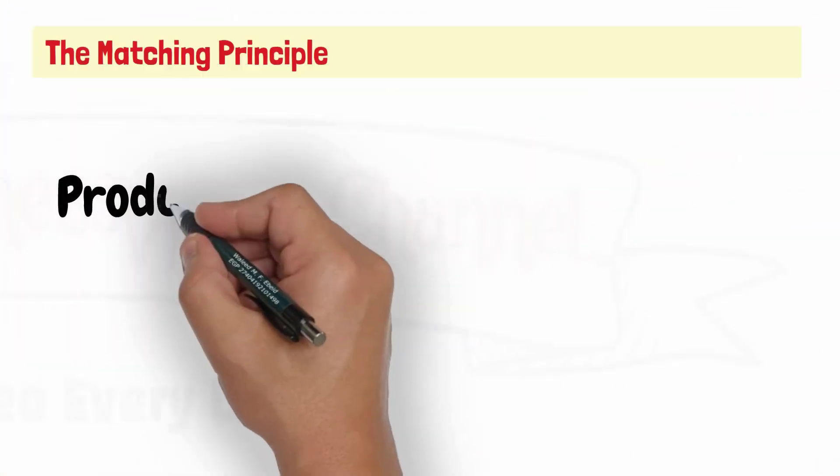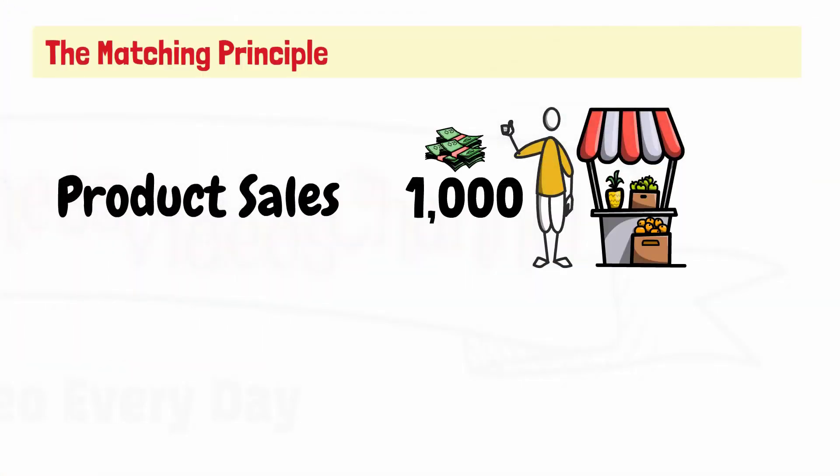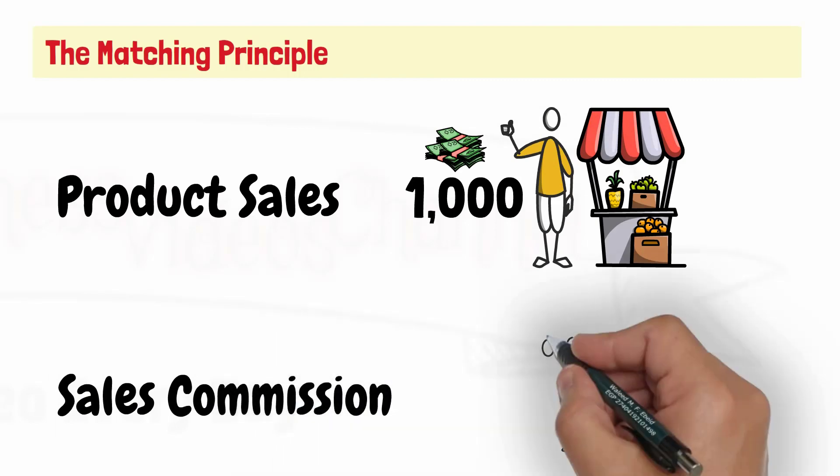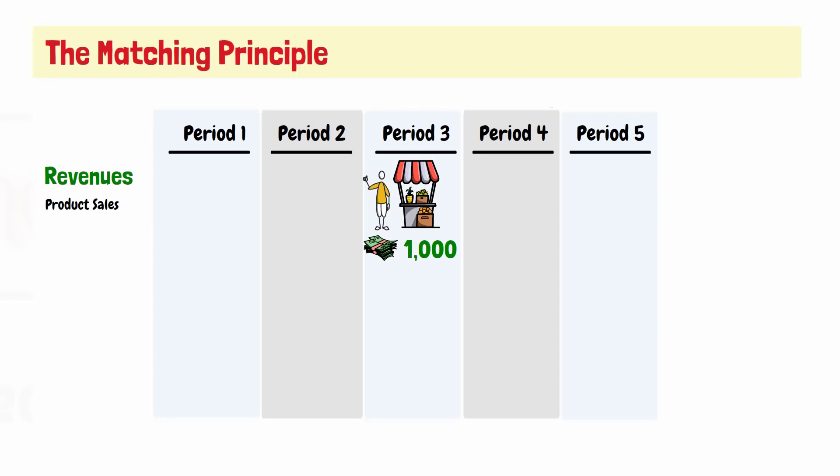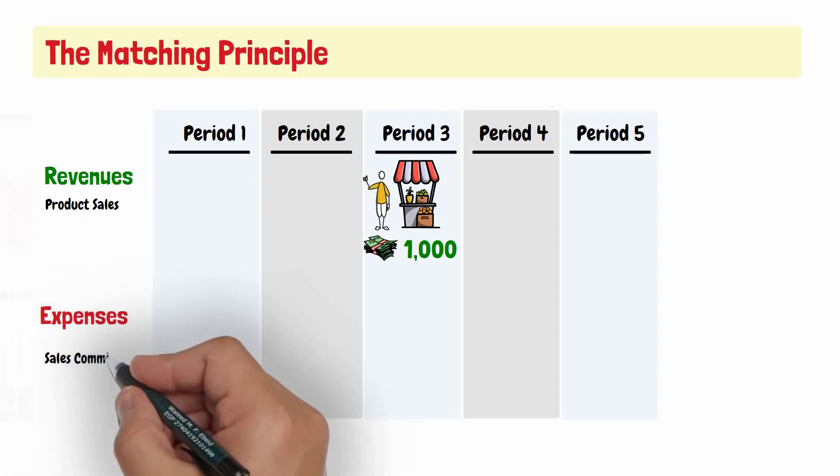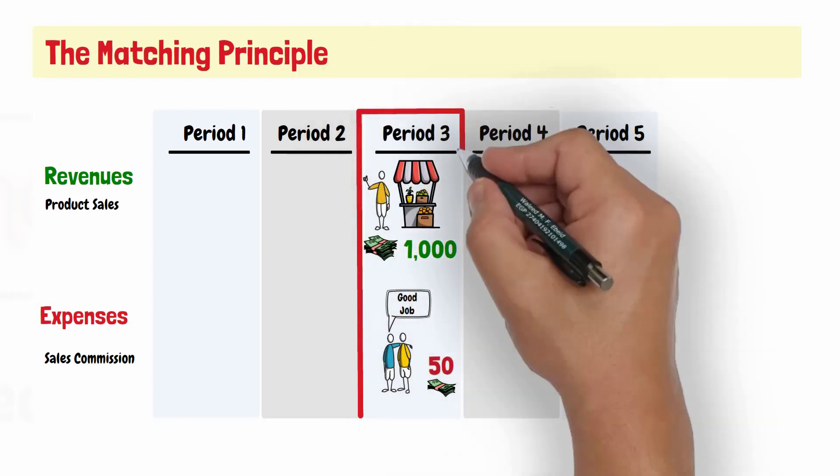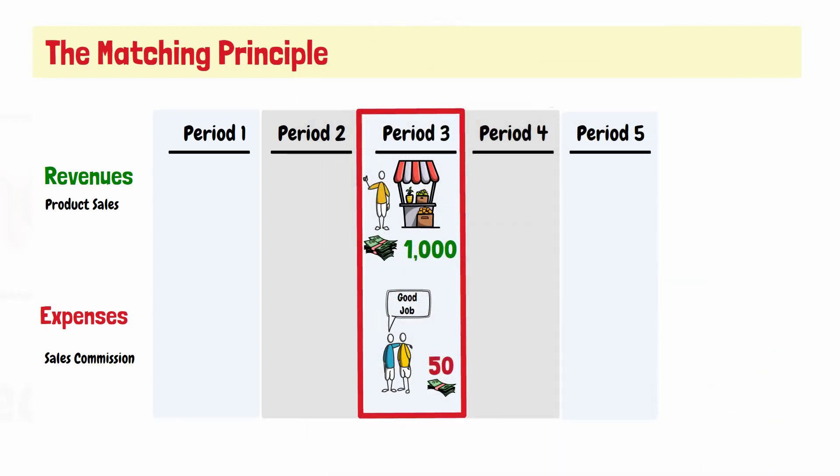Let us say that a company sold a product for 1,000, and it incurred sales commission of 50 to the salesman who sold that product. According to the matching principle, the company should recognize the sales commission expense of 50 in the same accounting period the 1,000 sales revenue is recognized.